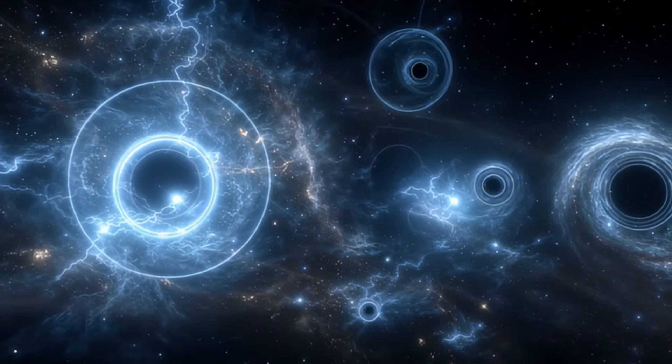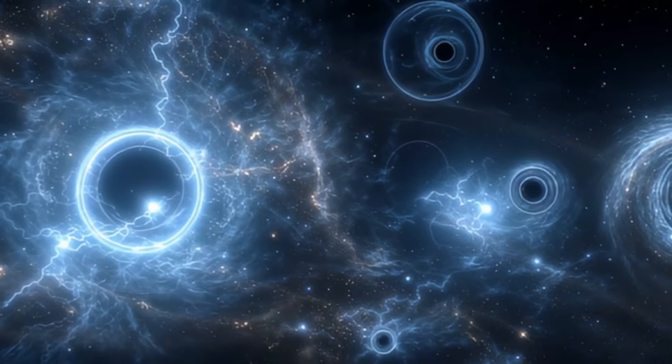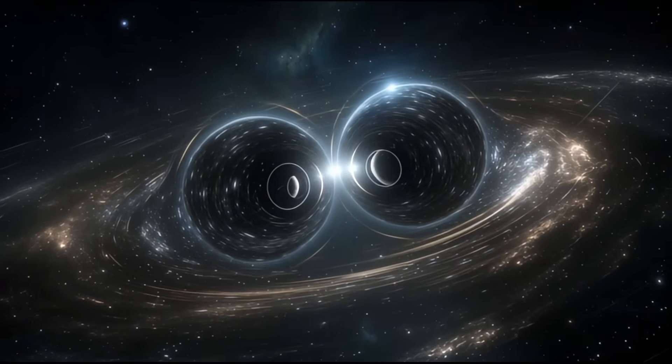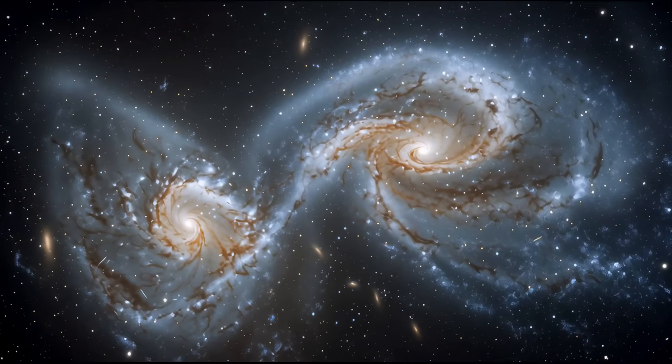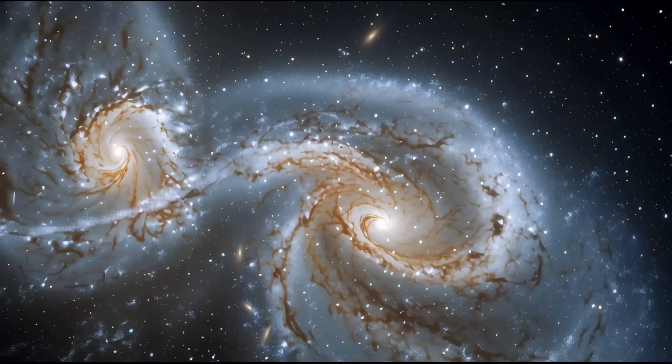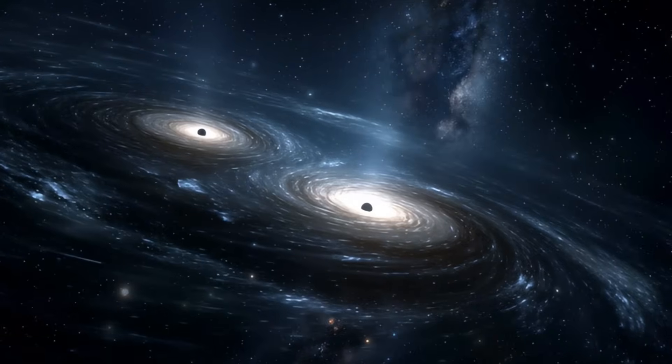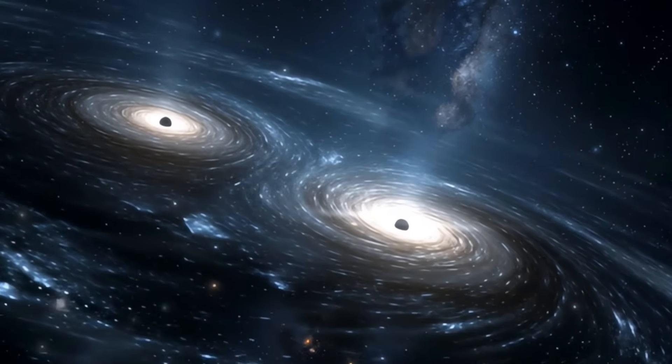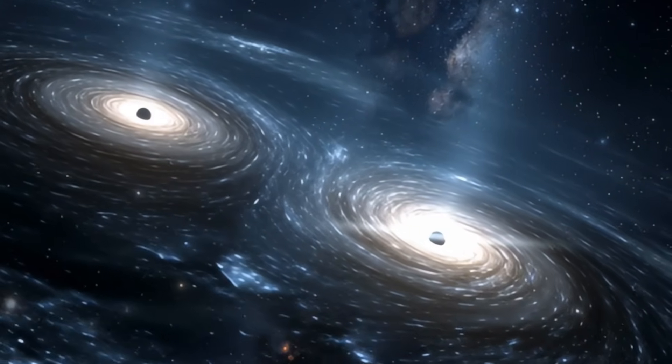This galaxy achieved its enormous size through cosmic cannibalism. Over billions of years, it has consumed and merged with countless smaller galaxies that wandered too close. Charles Liu's work on colliding galaxies shows us exactly how this process works. When galaxies merge, the stars themselves rarely collide because they're so far apart. Instead, the gravitational dance strips away gas and dust, the very ingredients needed to make new stars.